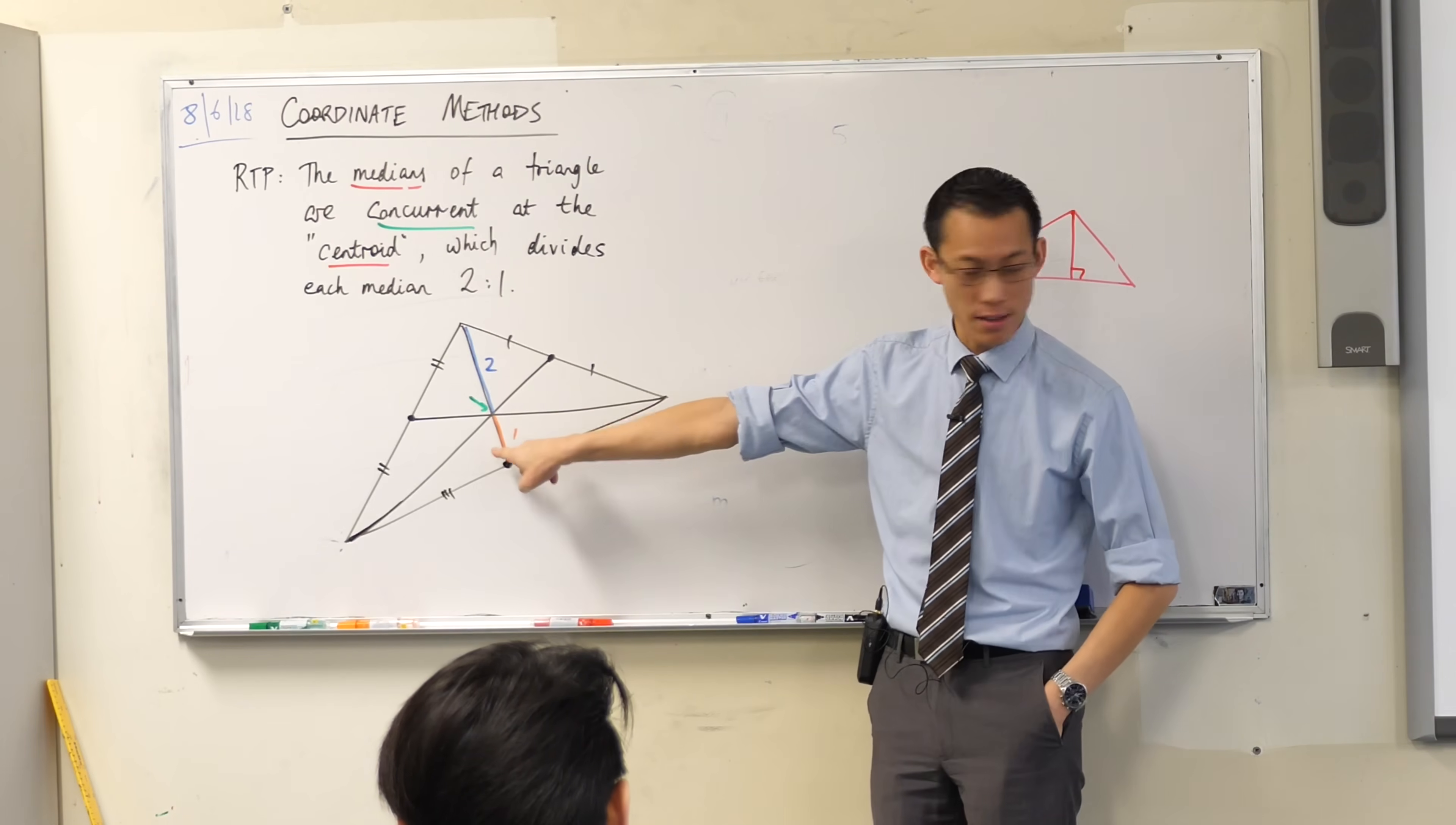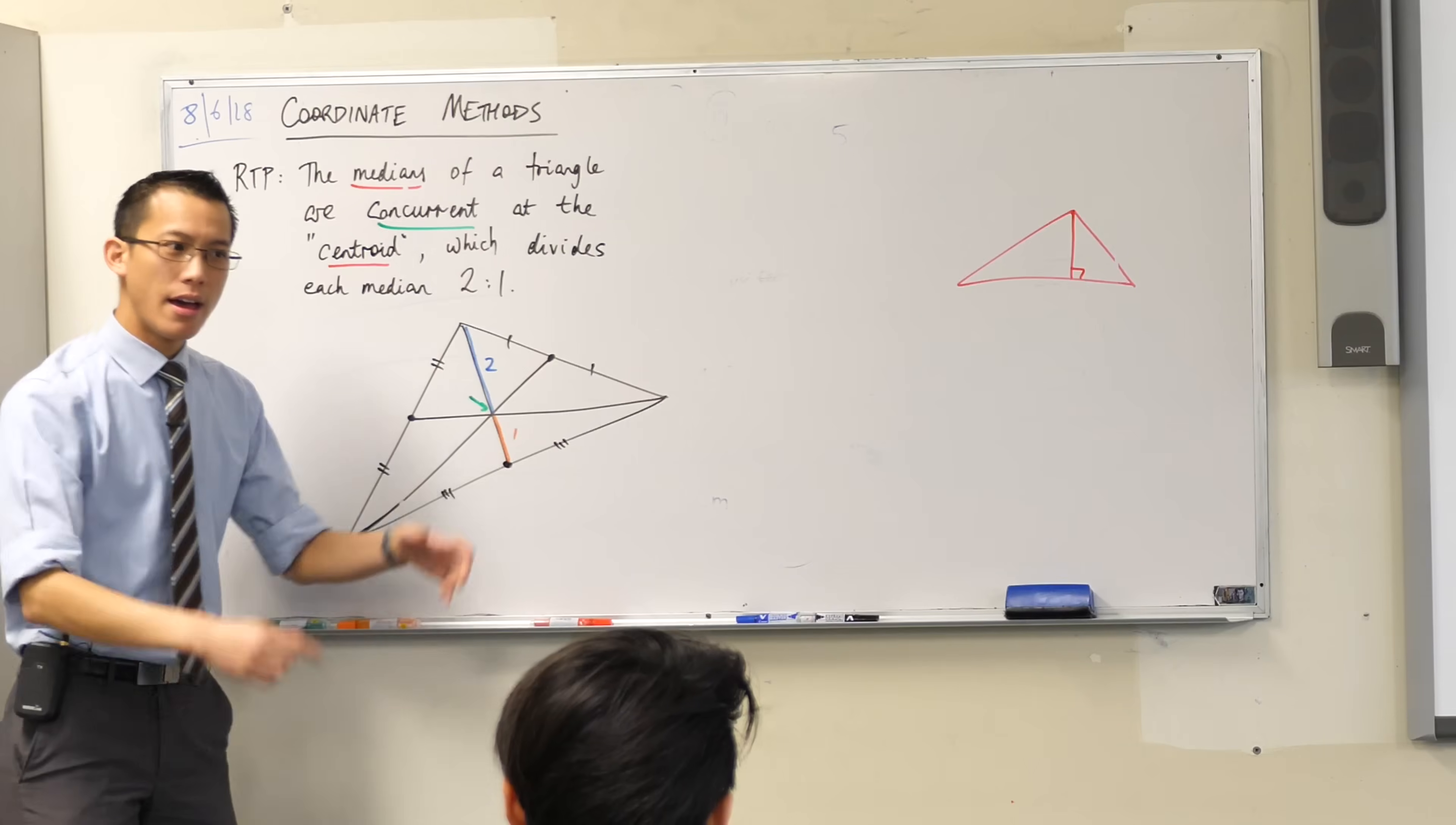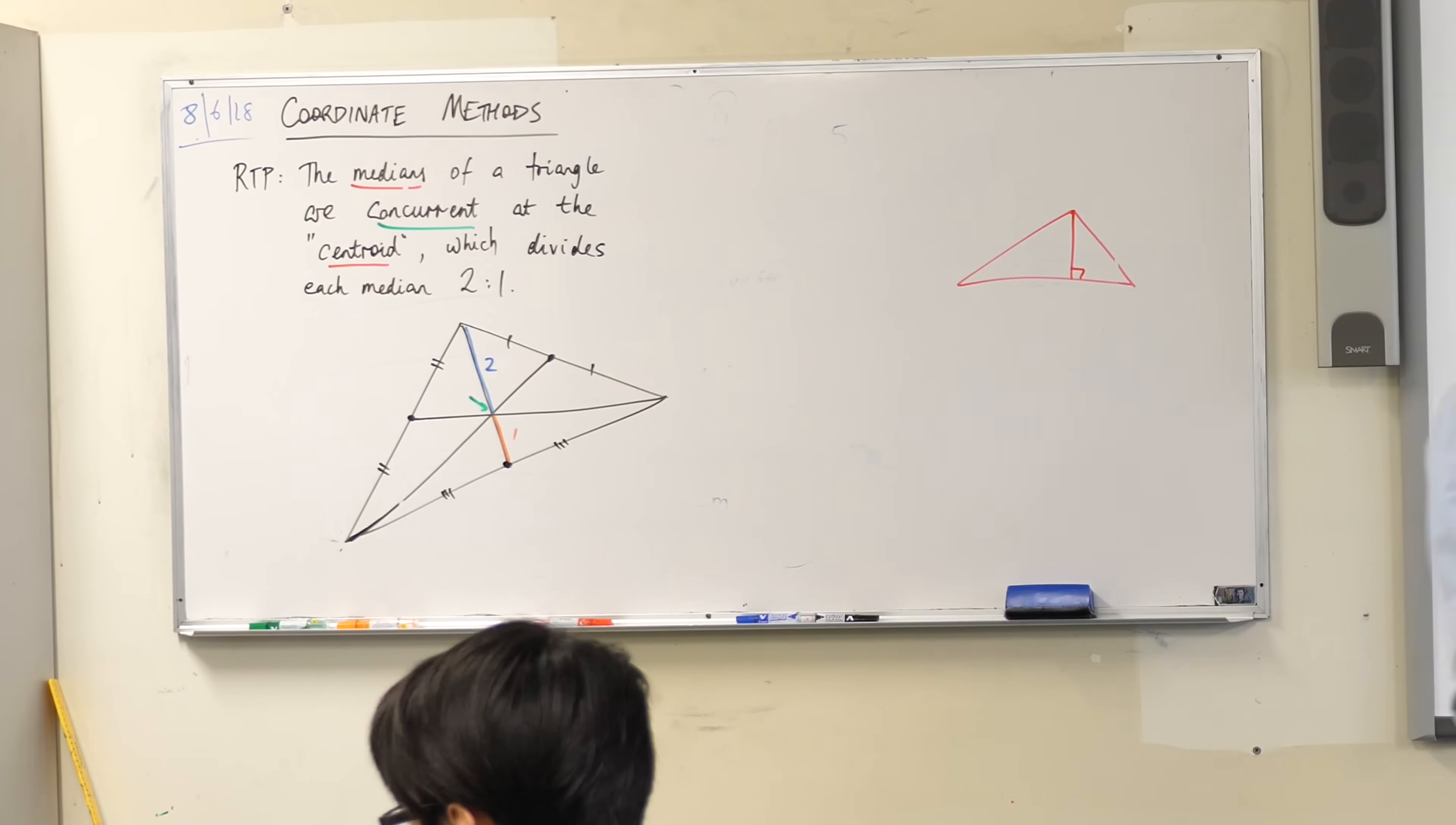If this is what we want, to show that they all coincide here, and that you're going to get this ratio, two to one, I guess, you'd also have two to one, and two to one. How would you do it? I actually want you to think for a few minutes, and then I'm going to show you the way that I did it. Okay, off you go. See what you come up with. You got an idea? Call me over.